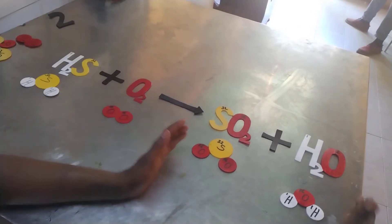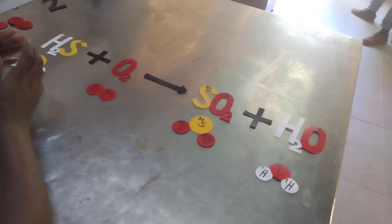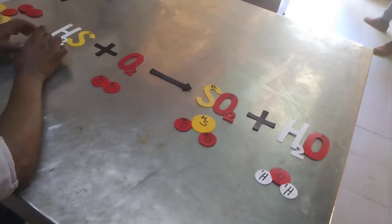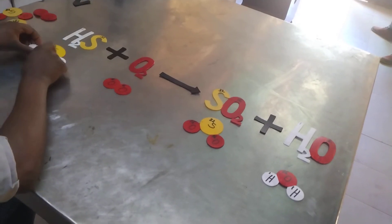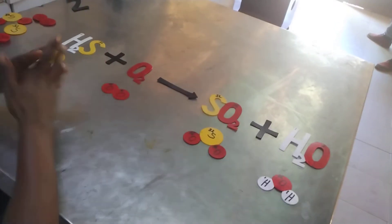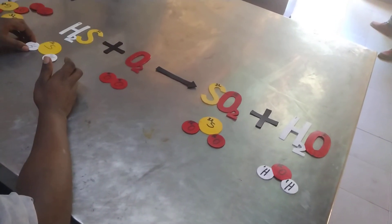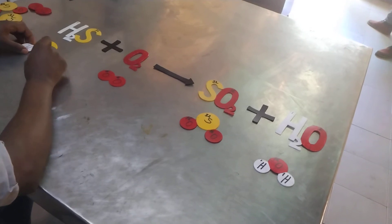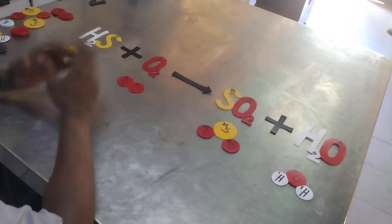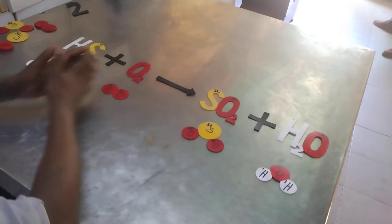This is the reactant side and these are our products. To balance this equation we evaluate one atom at a time. Starting with sulfur — we have one sulfur atom on the reactant side and one sulfur atom on the product side, so sulfur is balanced. For hydrogen, we have two on the reactant side and two on the product side, so hydrogen atoms are also balanced.